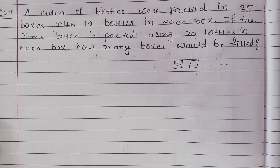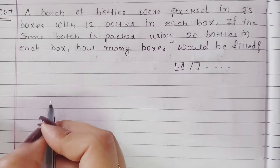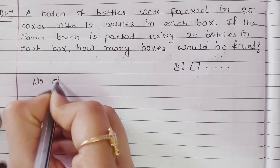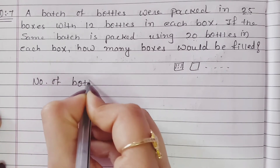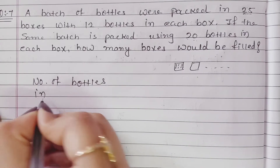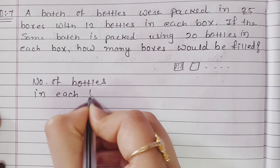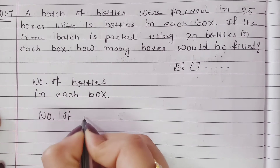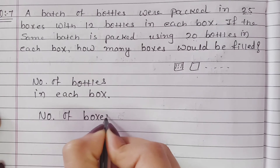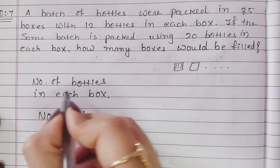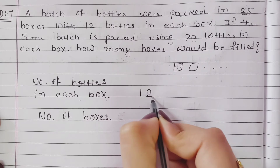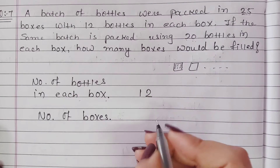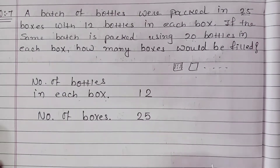First of all, we have the given details here. We have two headings: the first is number of bottles in each box, and the second is number of boxes. If the number of bottles in each box is 12, then the number of boxes is 25.